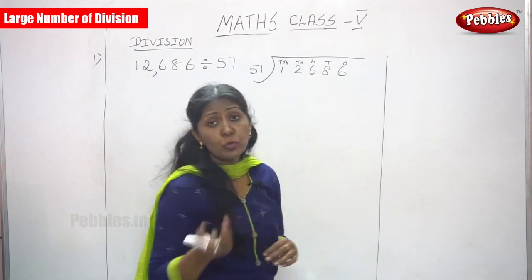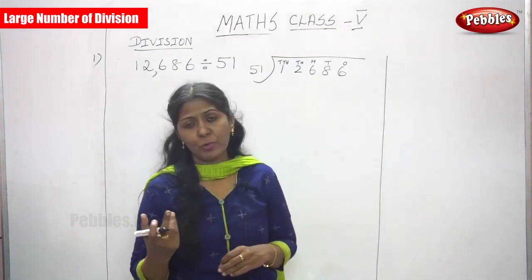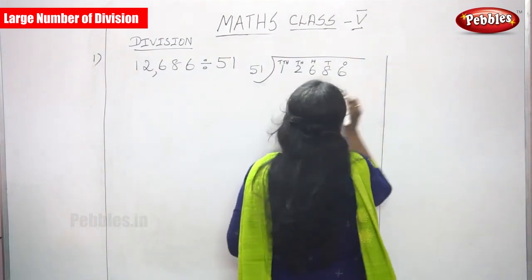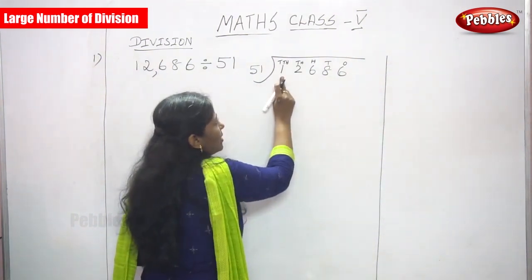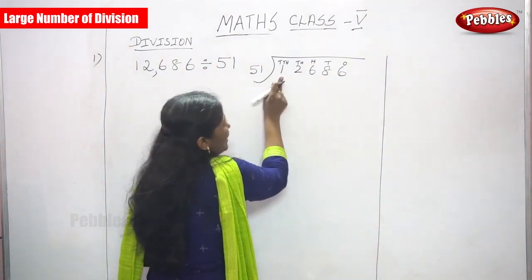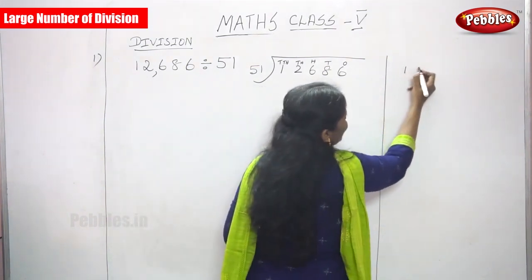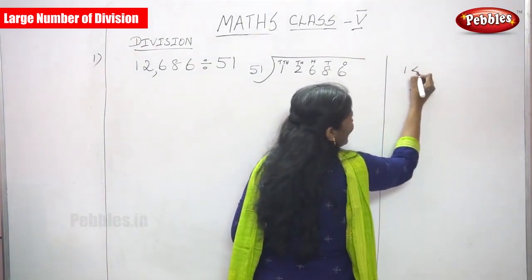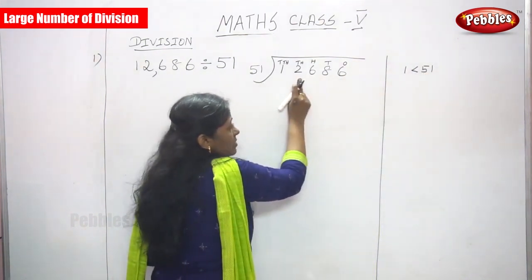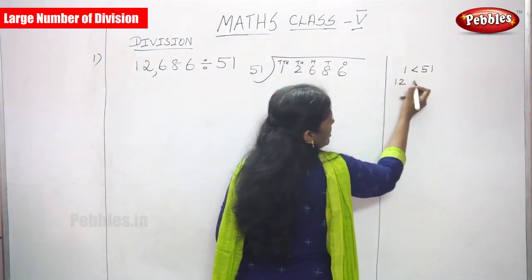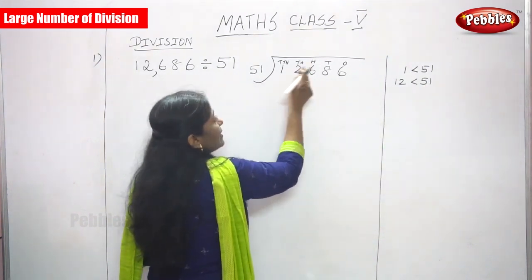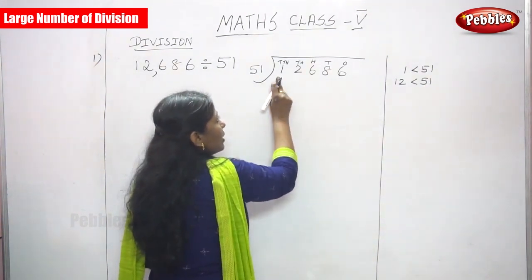You don't know the 51 times table because no one has memorized it, so you have to work it out. First, take the first digit, which is 1. 51 is a greater number and 1 is very much less than 51, so you can't divide. Go to the next digit — that is 12. Again, 12 is less than 51, so you can't divide.